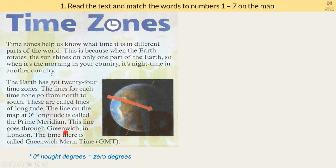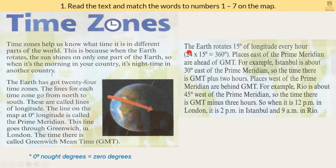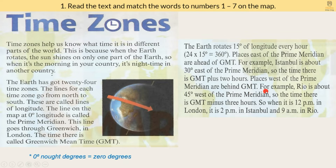This line goes through Greenwich in London. The time there is called Greenwich Mean Time. The Earth rotates 15 degrees of longitude every hour — 24 times 15 degrees equals 360 degrees. Places east of the prime meridian are ahead of GMT. For example, Istanbul is about 30 degrees east of the prime meridian, so the time there is GMT plus 2 hours. Places west of the prime meridian are behind GMT. For example, Rio is about 45 degrees west of the prime meridian, so the time there is GMT minus 3 hours.